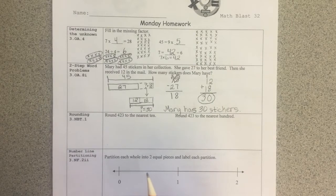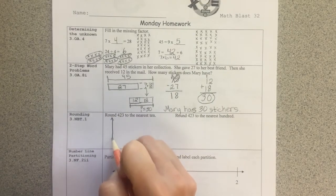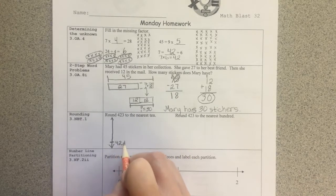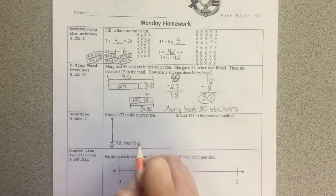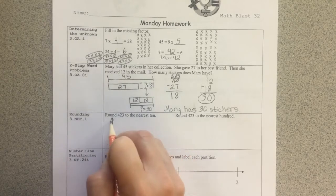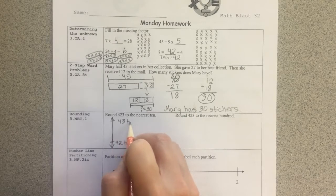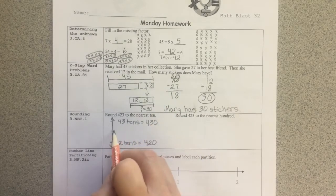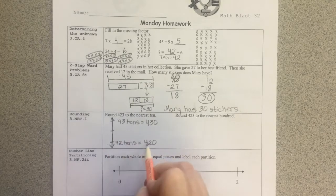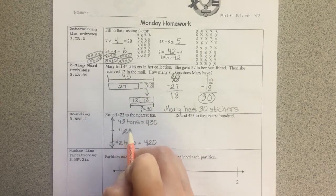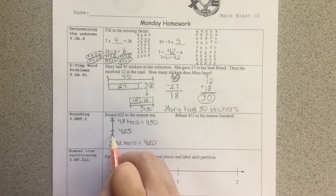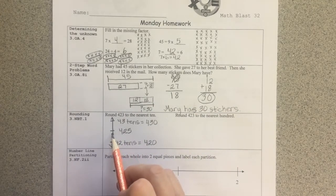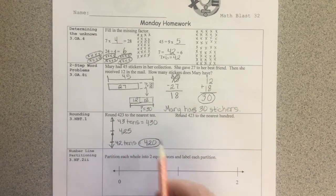Rounding. Round 423 to the nearest 10. I'm going to draw a vertical number line here and show that my number right now is made up of 42 tens. That's equal to 420 in standard form. If I add a 10 to that, it would be 43 tens, which in standard form is equal to 430. The midpoint, the number that lies right between 420 and 430 is 425. I will place my number 423 on the vertical number line. And since my number lies below the midpoint, it will round down to 420.